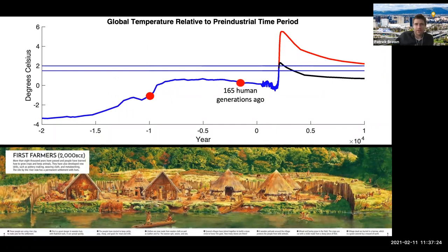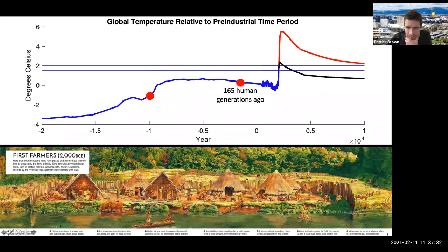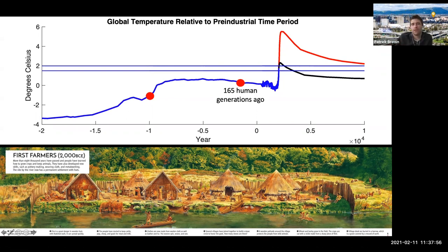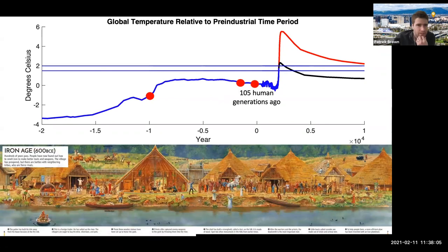Then farming develops — this is 2000 BCE. We see more sophisticated huts and towns developing: a blacksmith, people sewing, a hunter, domestication of animals, fisher people. We have sheep out here, so we're starting to use animals for food and for warmth in a systematic, agricultural way.